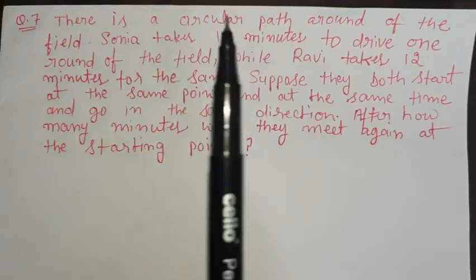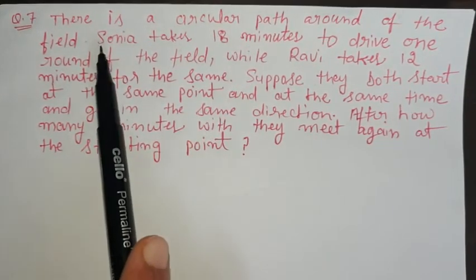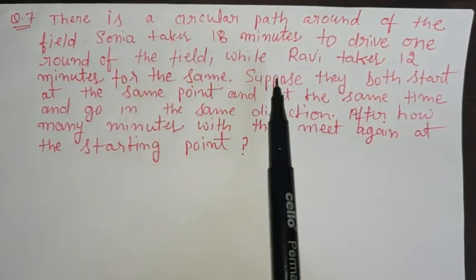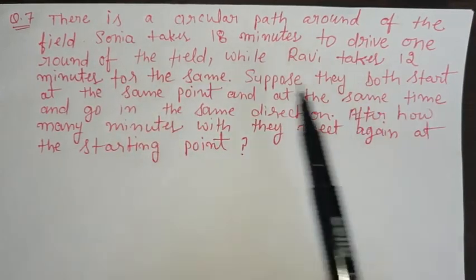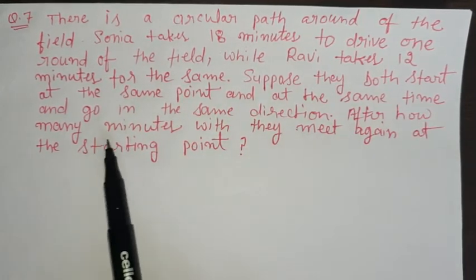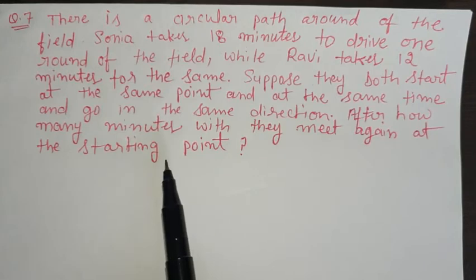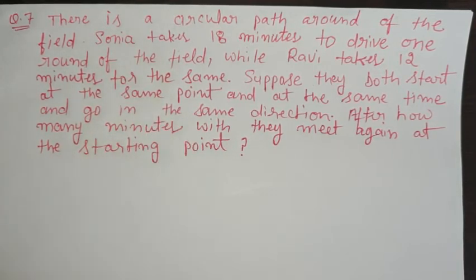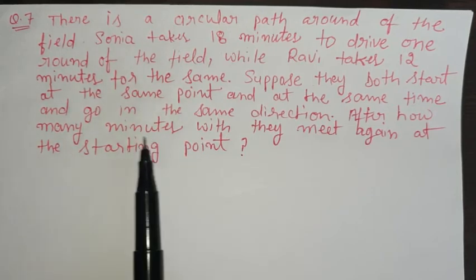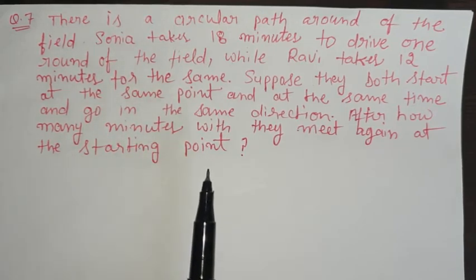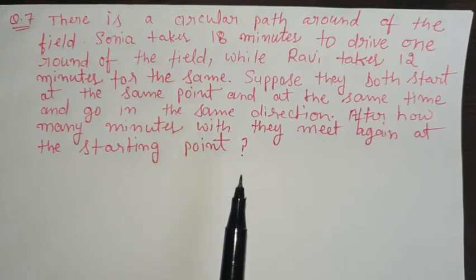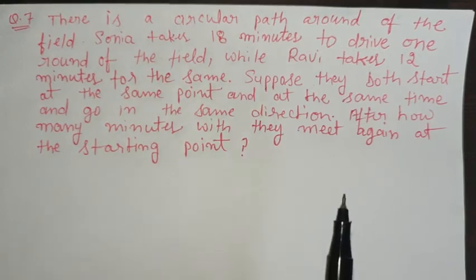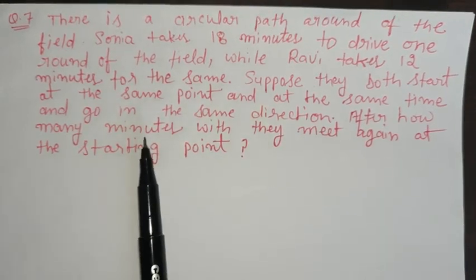Question number 7: There is a circular path. Sanya takes 18 minutes to complete one round and Ravi takes 12 minutes. They start from the same point at the same time and in the same direction. When will they meet again? For this type of question, we take the LCM of their times, because things starting at the same time can meet again only at a common time interval.